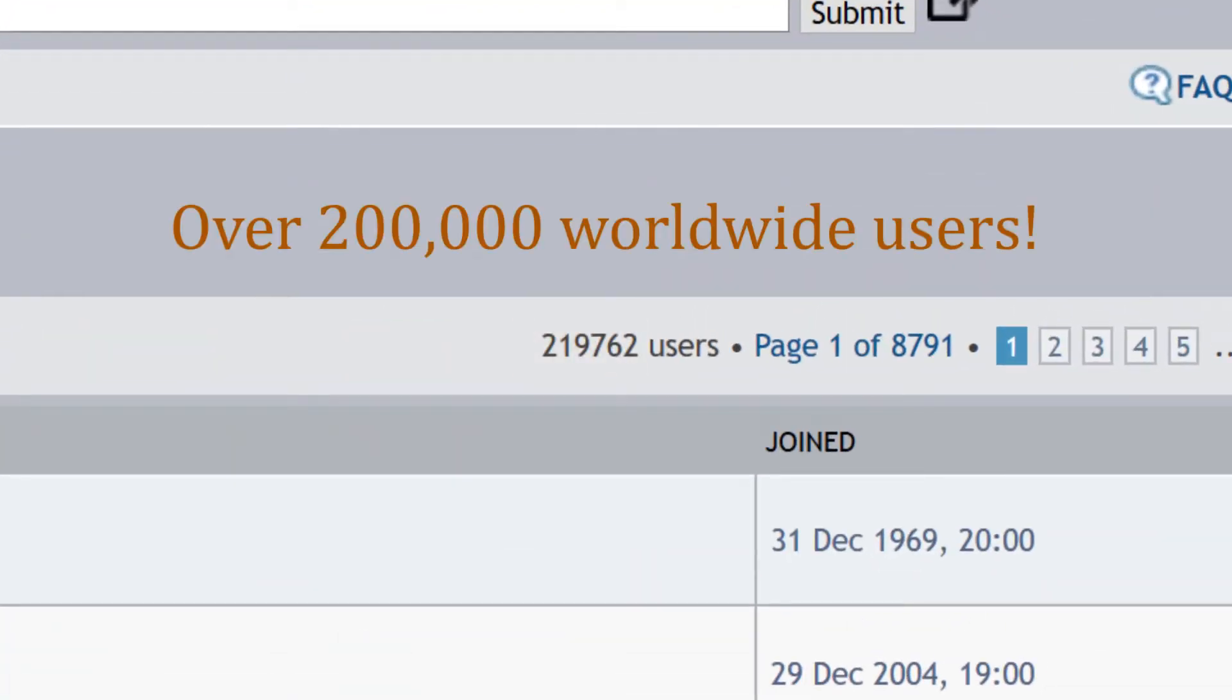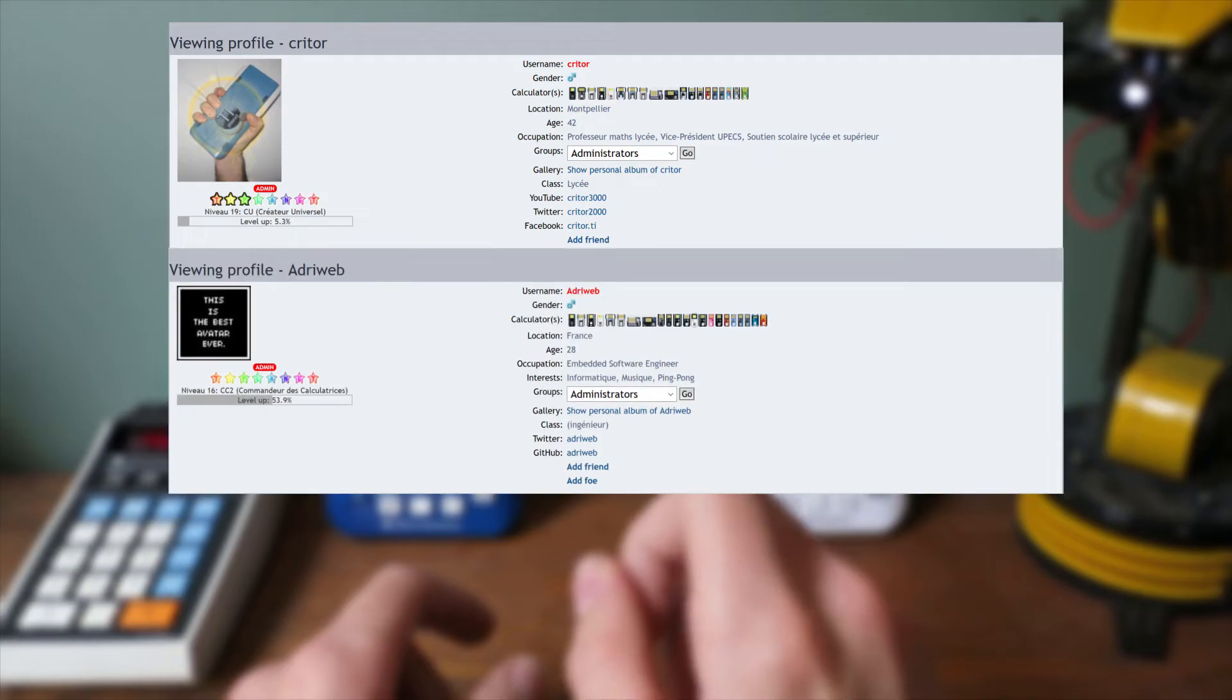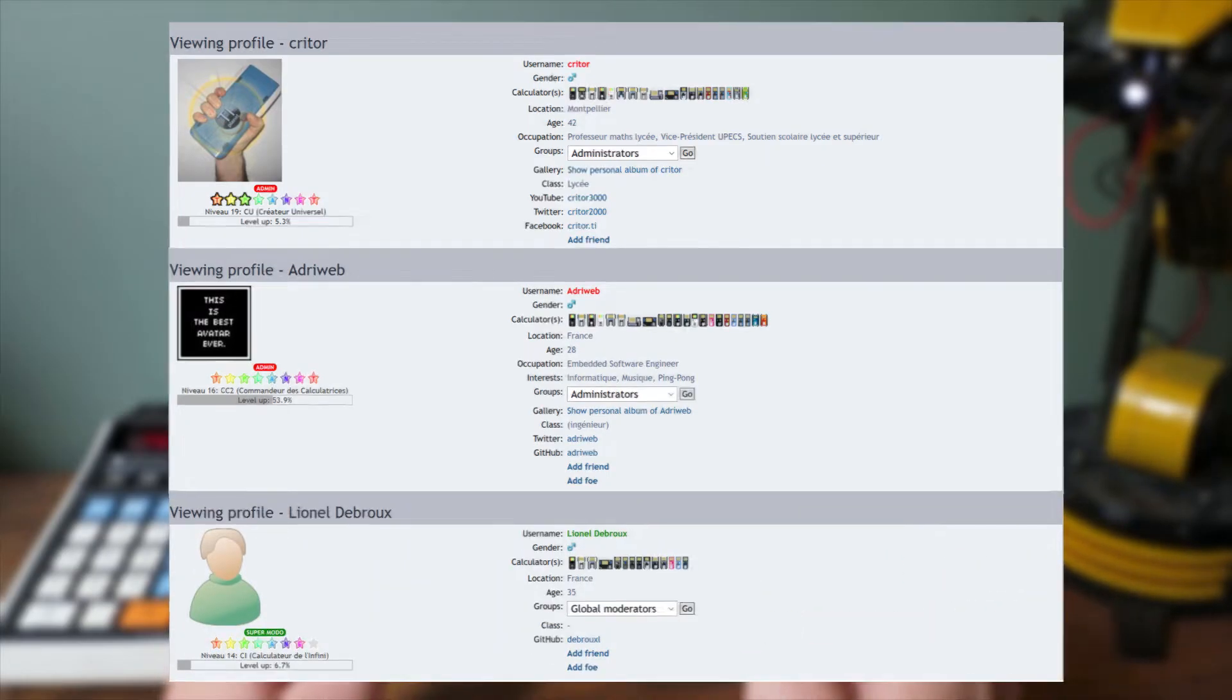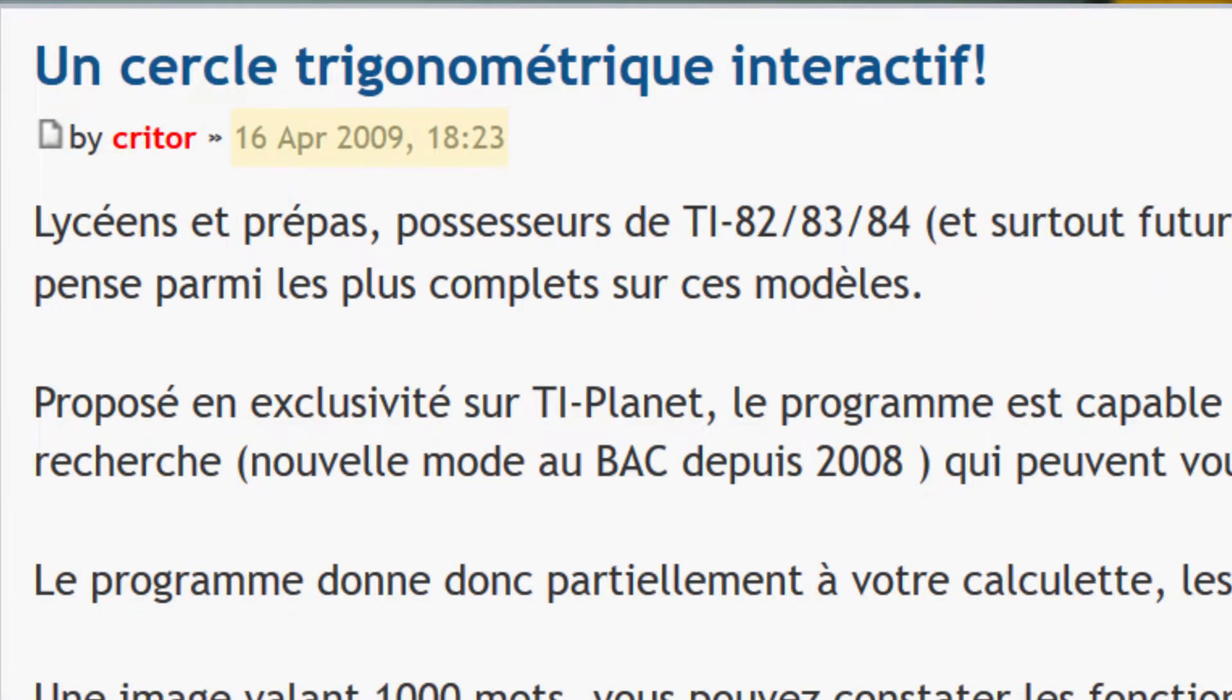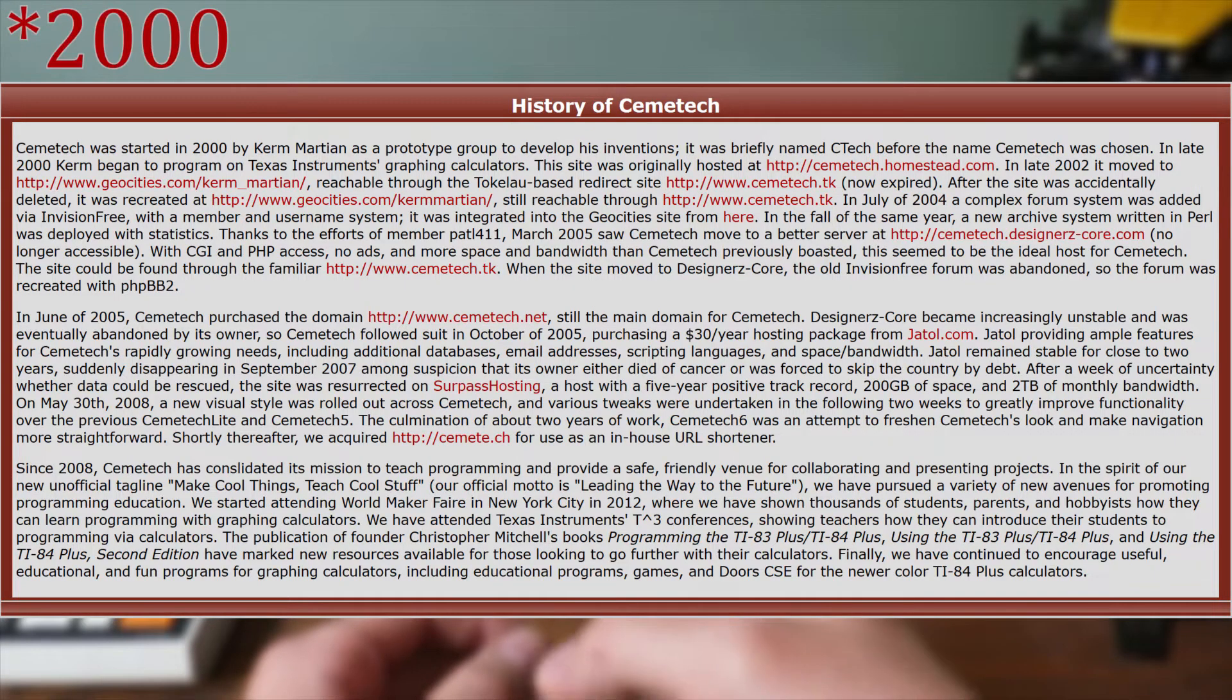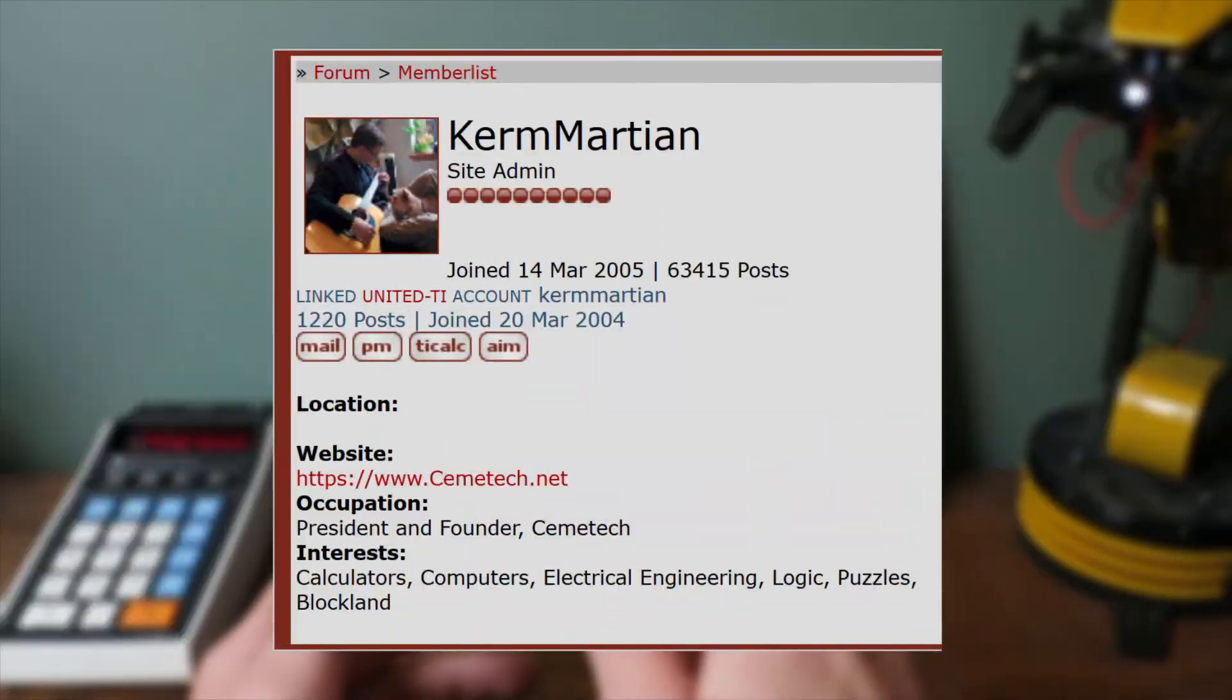If you've never heard of these forums before, you just need to know TI Planet is a very large and reputable French forum. Among the co-founders still active today are Critor, Adriweb, and Lionel Debroux. They have been reporting news about TI and other calculator brands for over 10 years. Cemetech is similar to TI Planet, however it is predominantly English and has been around since 2001. Its founder is Kerm Martian.